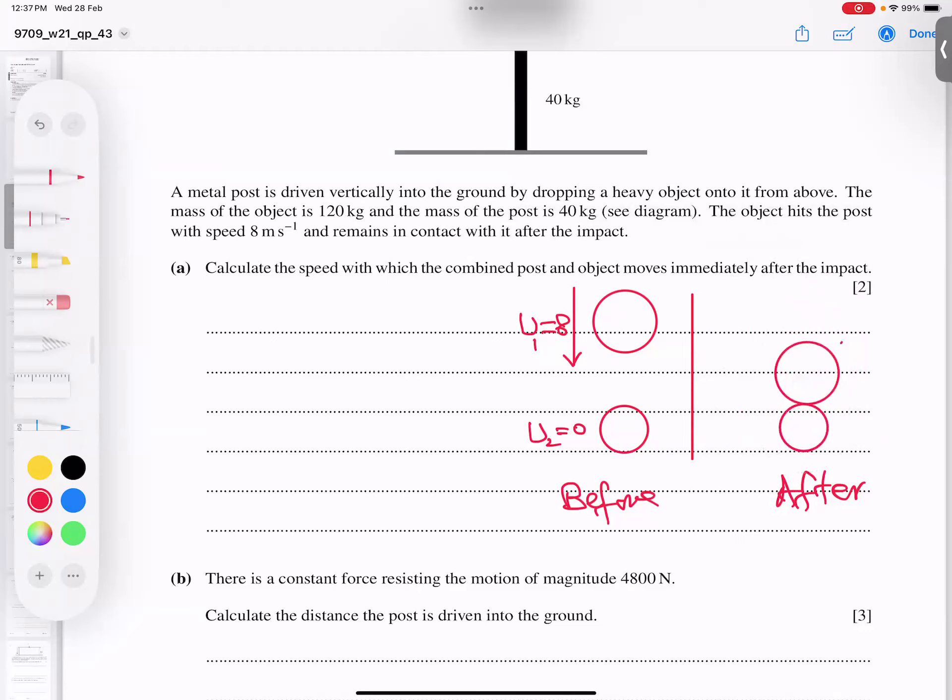They will behave as one object and they will move down with a speed V. The mass of this object is 120 kilograms and there's 40, so this becomes 120 plus 40, we come together, 160. What is the law of conservation momentum? M1U1 plus M2U2 equals M1V1 plus M2V2. Mass into V, so 120 into 8, and 40 into 0, so I get 0.